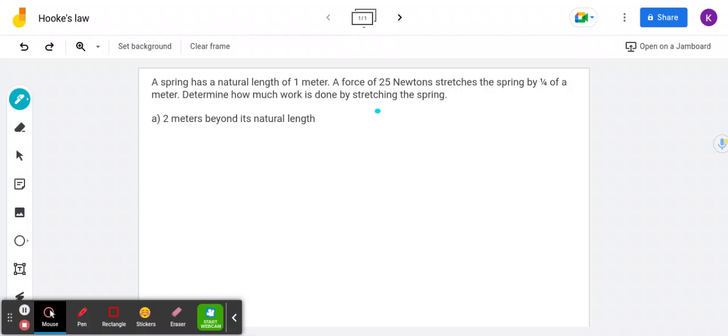Hi, I'm Kian, and in this video I'm going to show you how to use calculus to solve this physics problem. We have this problem: a spring has a natural length of one meter, and a force of 25 newtons stretches the spring by one-fourth of a meter. Determine how much work is done by stretching the spring two meters beyond its natural length.